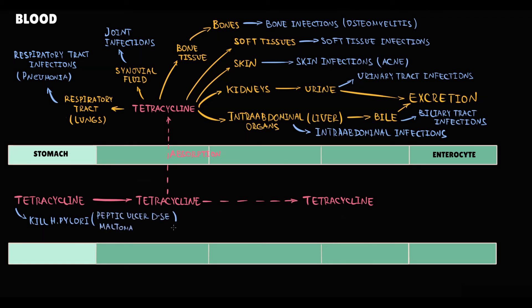Because tetracyclines are partially absorbed and partially remain in the intestine, they are effective against both invasive intestinal pathogens as Shigella infection and non-invasive infections as Vibrio cholera, for example, unless bacteria are resistant to tetracyclines.